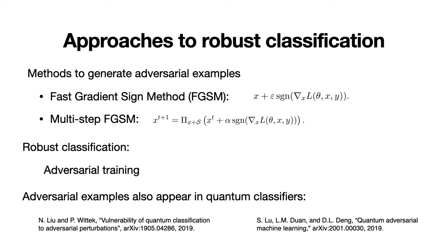Classically, the method for excellence to avoid them is adversarial training using gradient descent. One of the most popular methods to find those examples is the fast gradient sign method, that shifts the input in the direction where the classification changes the most. If we use multiple steps, it will be called projected gradient descent. Notice that adversarial examples also appear in quantum classifiers.